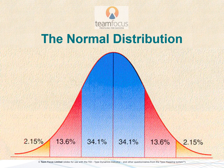This distribution is very well studied and we can be very precise about the proportion of people that will fall within certain ranges away from the average, as shown here. So now let's apply this to scores we may obtain from a personality questionnaire.